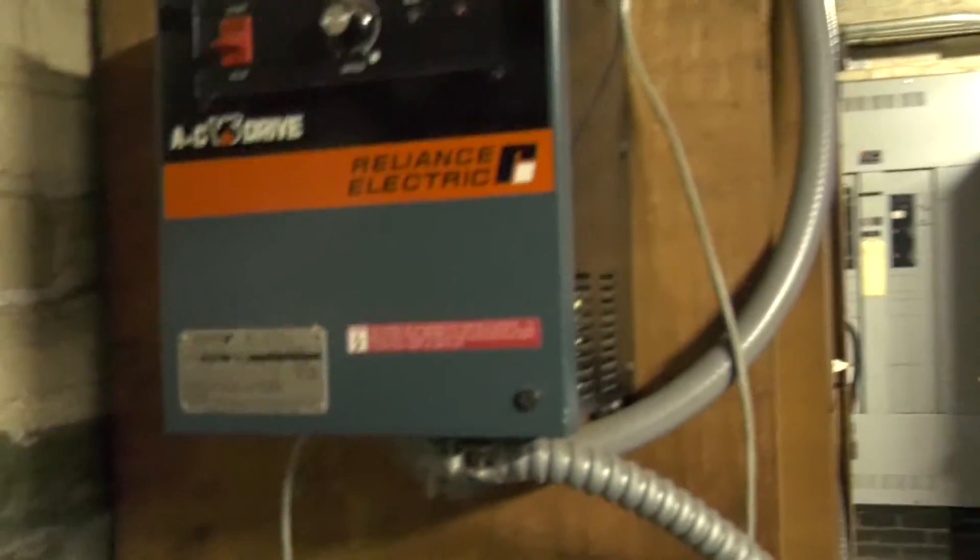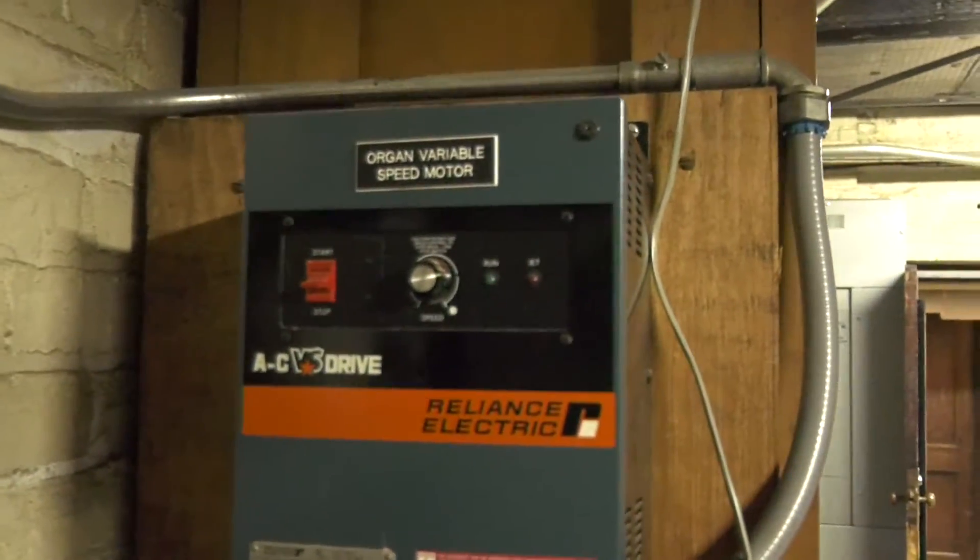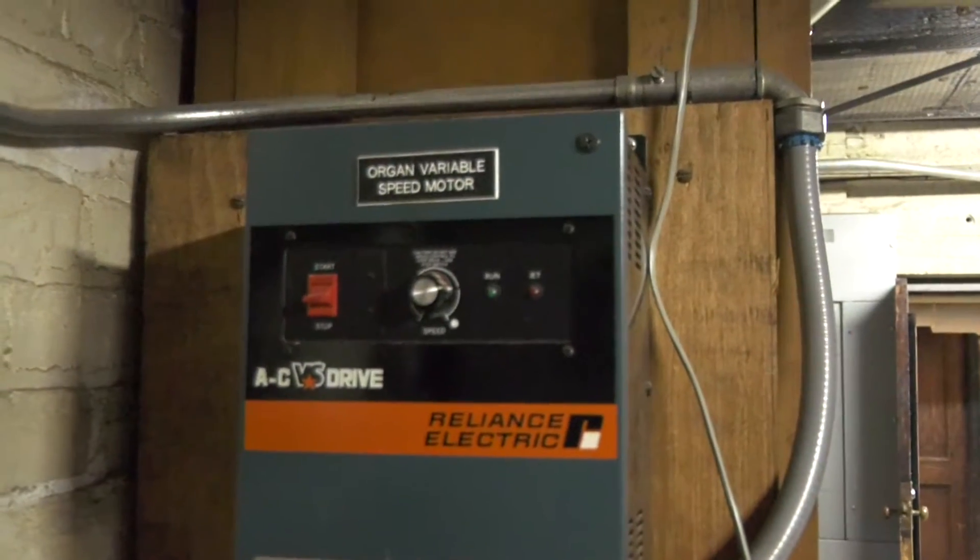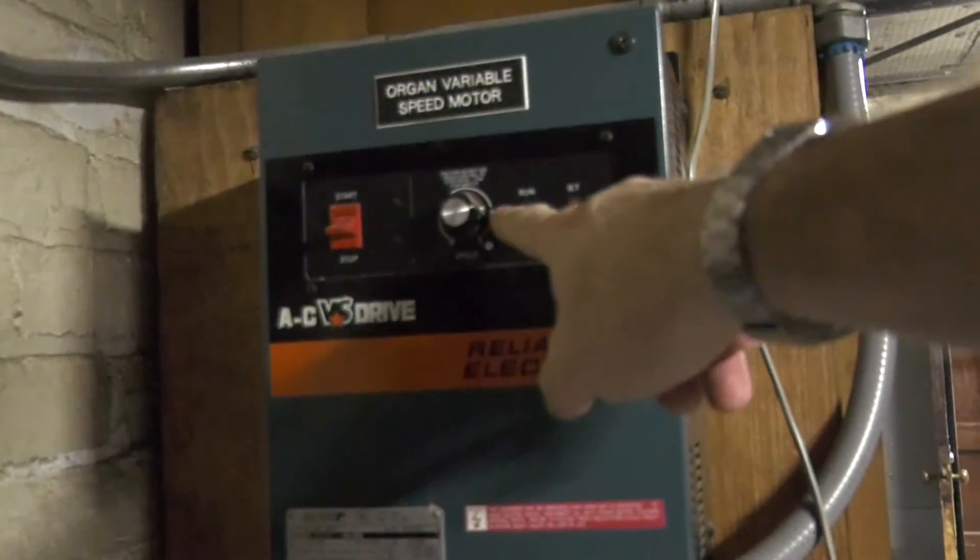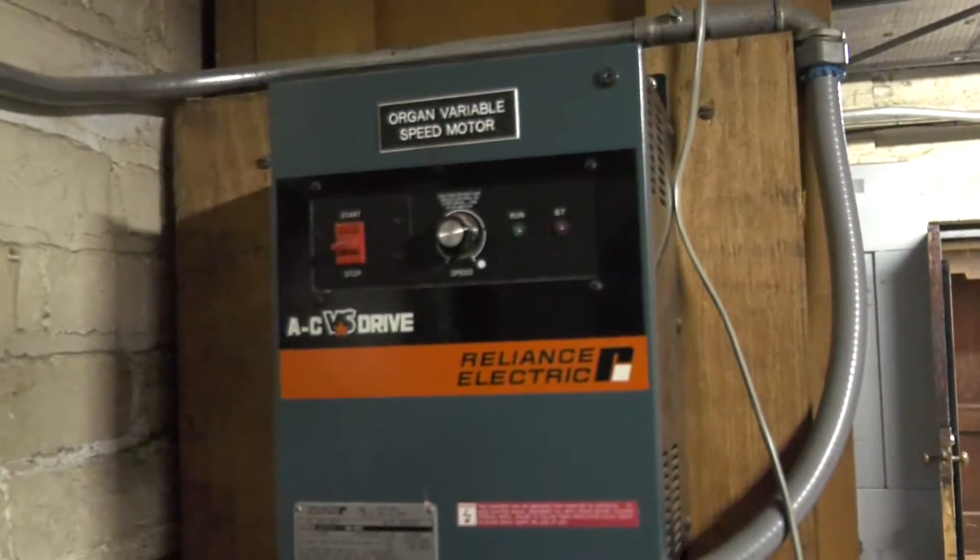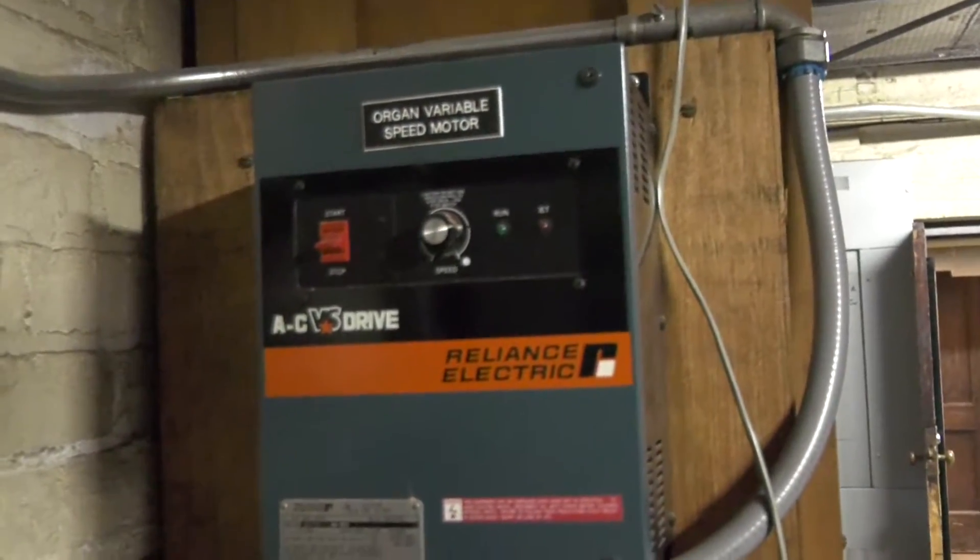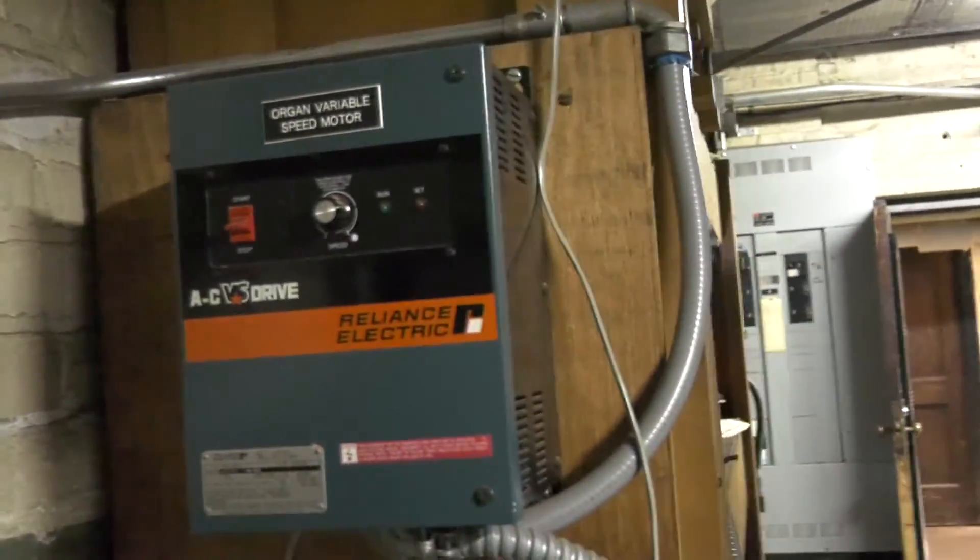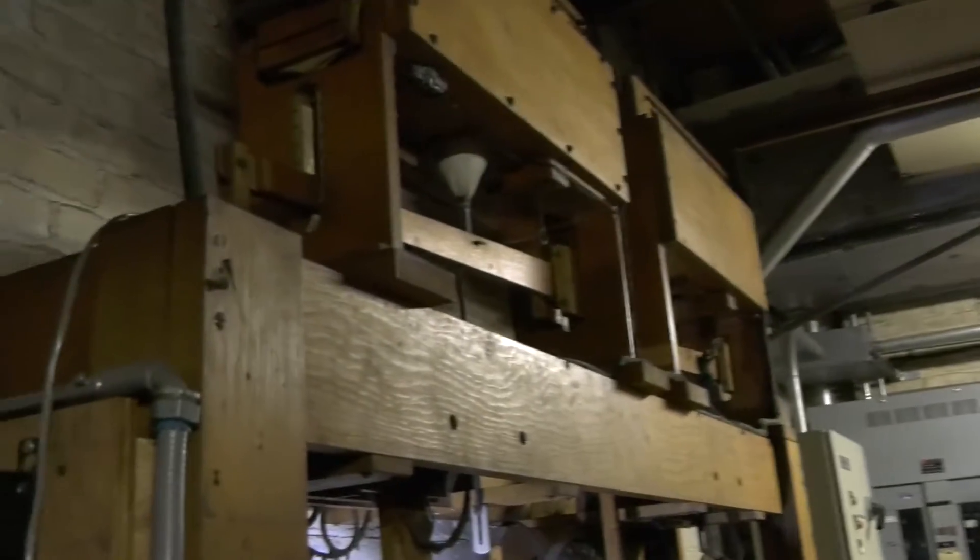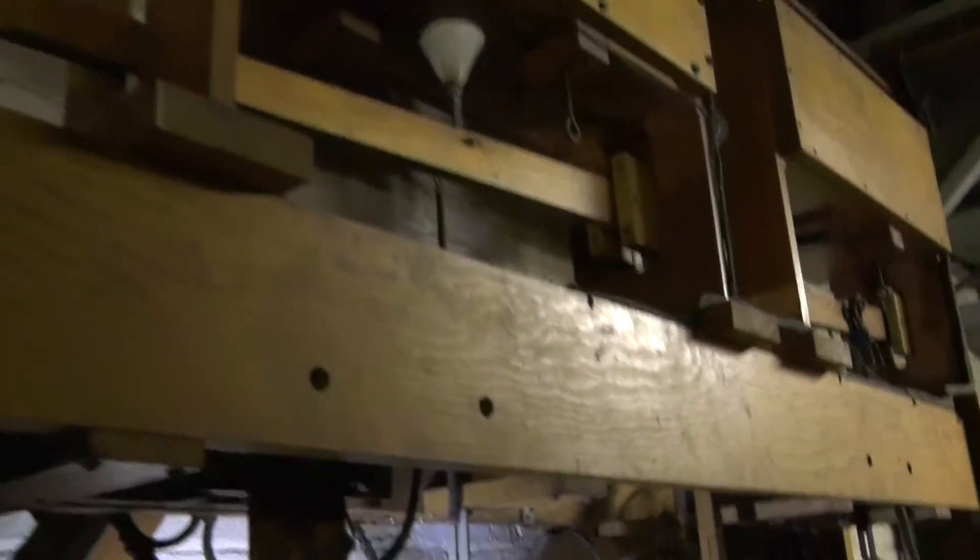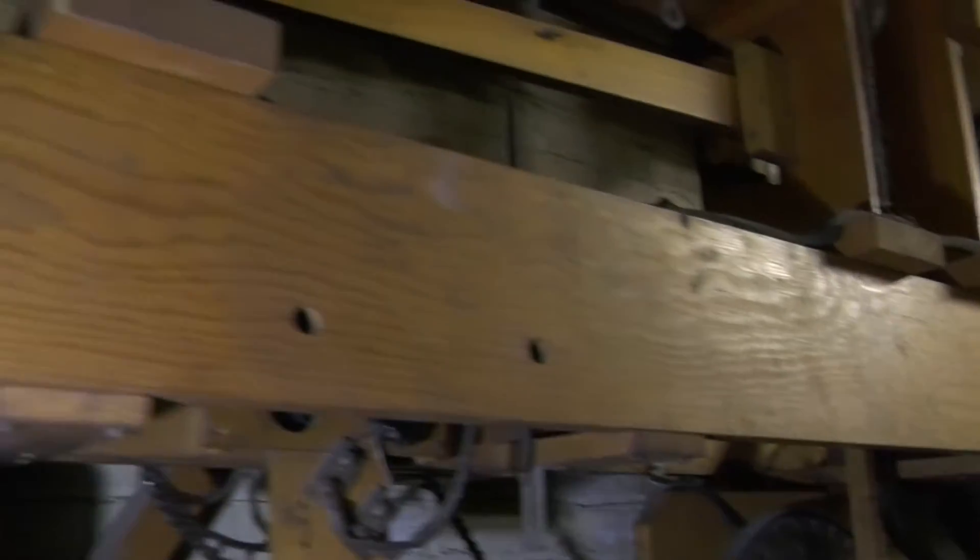So the speed control is not operating now. What they do have is that control right there, and you can see it says organ variable speed motor, and it's set right there. That is controlling the speed of the tremolos now. So you can't control the speed of the tremolos from the console right now.